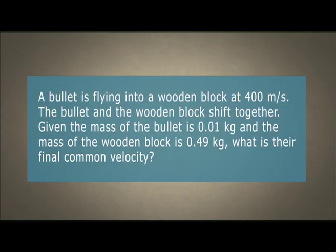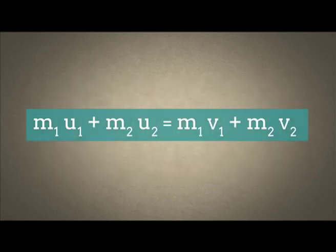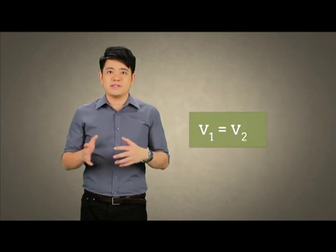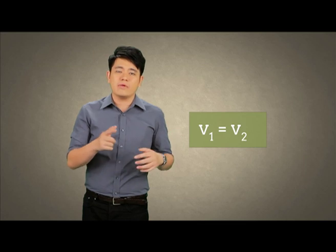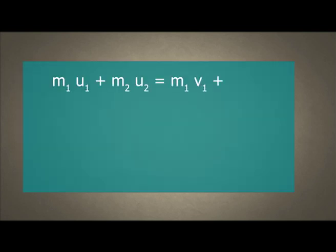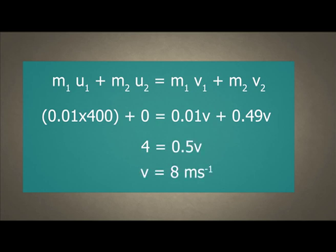Let's use the formula to solve an exam question. A bullet is flying into a wooden block at 400 meters per second. The bullet and the wooden block stick together. Given the mass of the bullet is 0.01 kg and the mass of the wooden block is 0.49 kg, what is their final common velocity? Using the formula MU plus MU equals MV plus MV: M1 is 0.01 kg, U1 is 400 meters per second, M2 is 0.49 kg, and U2 is 0. Since the bullet and the wooden block are moving together, they will have the same final velocity. Substitute the same values for mass on the right side of the equation, and the answer is 8 meters per second.